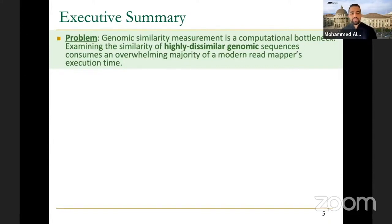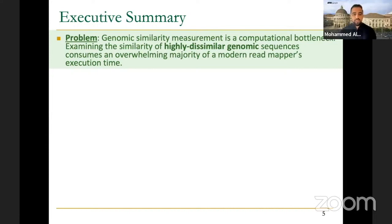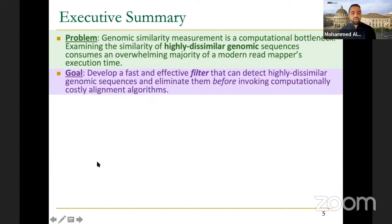We observe that examining highly dissimilar genomic sequences — where there are a lot of variations — is probably not interesting for inferring the causes of disease. There is always a threshold: a number of errors you can tolerate. Whenever two sequences have too many differences exceeding that threshold, we should not use the expensive algorithm for those sequences. Our goal is to develop a fast and effective filter that detects highly dissimilar sequences and eliminates them before invoking the computationally expensive step.